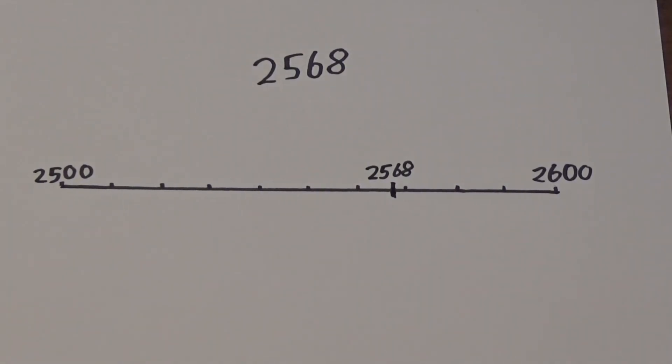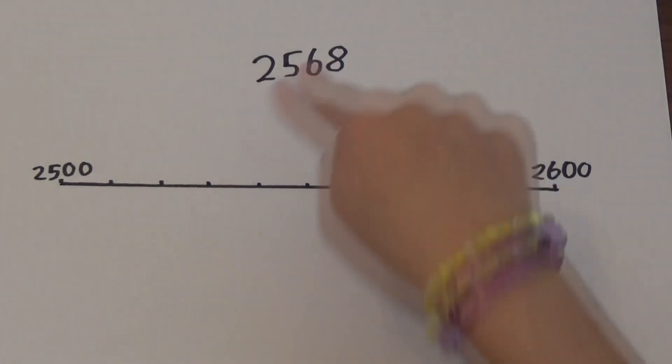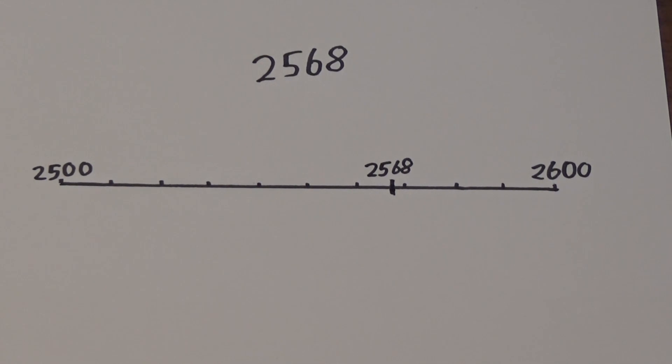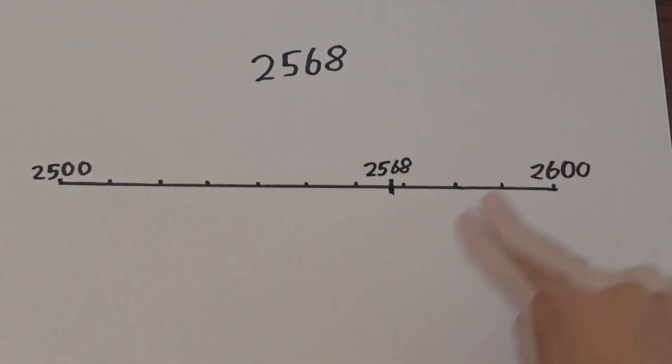This time I'm going to look at rounding to the nearest hundred when we have a four-digit number. I'm going to round the number 2,568. If I focus on the 568, I need to work out which multiples of 100, 568 falls between. It falls between 500 and 600, so I've labelled my number line with 2,500 at the start and 2,600 at the end.